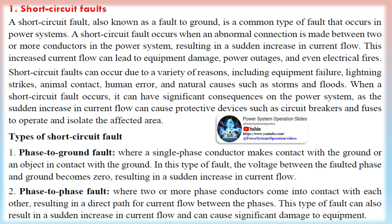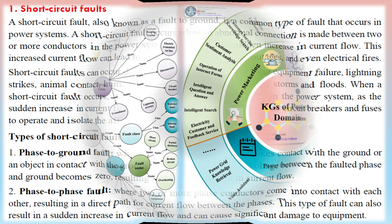A short-circuit fault, also known as a fault to ground, is a common type of fault that occurs in power systems. A short-circuit fault occurs when an abnormal connection is made between two or more conductors in the power system, resulting in a sudden increase in current flow. This increased current flow can lead to equipment damage, power outages, and even electrical fires.